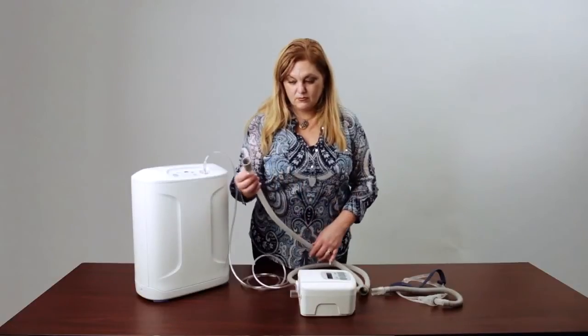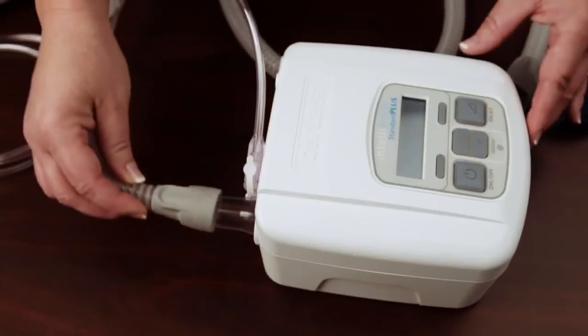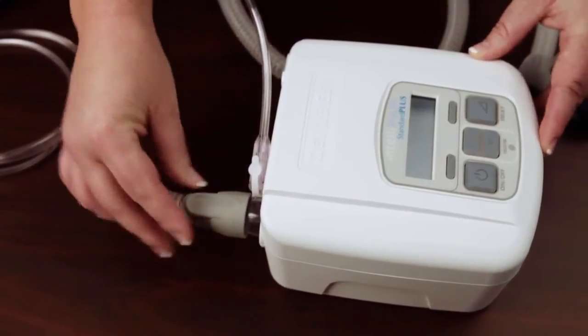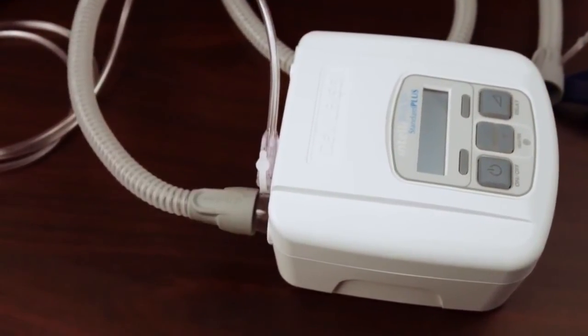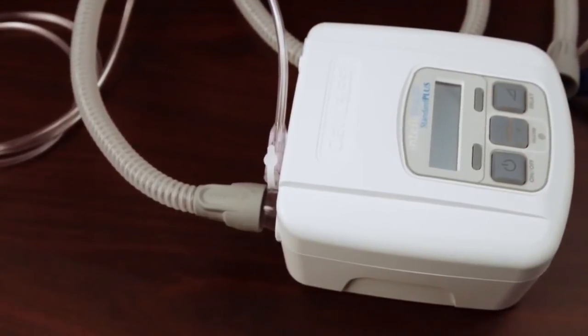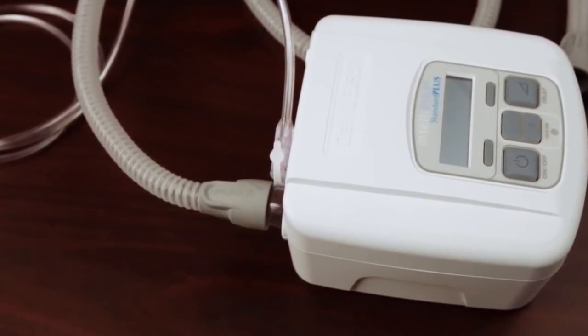Attach the CPAP tubing to the other end of the bleed-in adapter. The CPAP tubing will fit directly onto the large opening opposite the end connected to the machine.